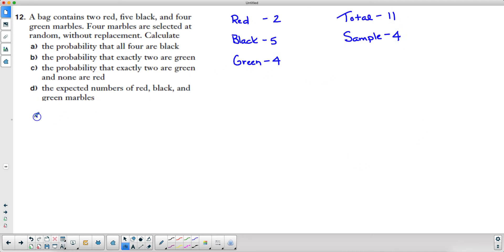Now that I've got that all laid out, let's take a look. Part a says the probability that all four are black. We're going to take five choose four for the black marbles, and we have to do six choose zero for the other marbles. Then the bottom is always the total choose the sample size, so the total is 11 choose four. Plug that into your calculator and you should get 0.015 or 1.5 percent.